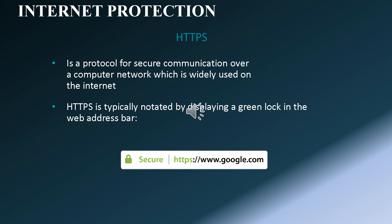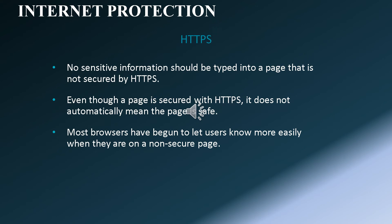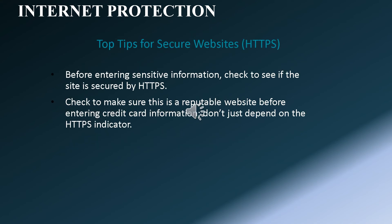HTTPS is a protocol for secure communication over a computer network, widely used on the internet. It is typically indicated by a green lock in the web address bar. No sensitive information should be typed into a page not secured by HTTPS. Even though a page is secured with HTTPS, it does not automatically mean the page is safe. Most browsers now let users know more easily when they are on a non-secure page. Top tips: before entering sensitive information, check if the site is secured by HTTPS, verify it is a reputable website before entering credit card information, and don't just depend on the HTTPS indicator.